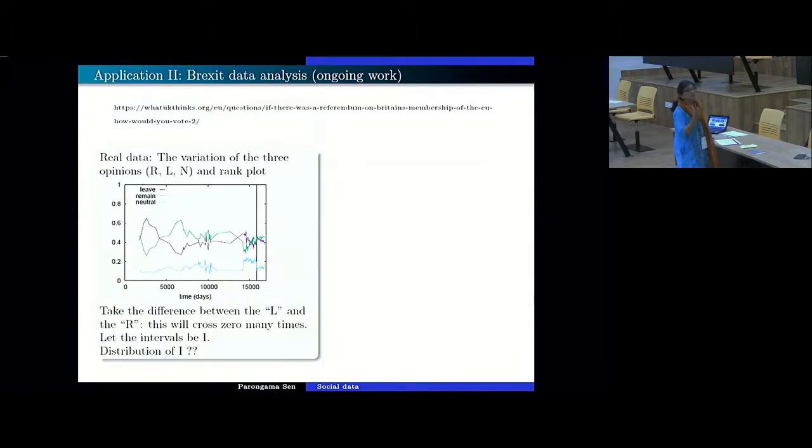So the other application is in the Brexit data analysis. You all know about Brexit, so I do not need to go through that. One more minute please. So we have three kinds of population. One part they want to leave, one part wants to remain and one part is neutral. So these are the behavior of the three. Time zero is some day in 2012 and this is the date where the referendum actually took place. Okay. So what we did was we took the difference between L and R and found out how many times it will cross zero. Crossing zero means that the verdict will be opposite. Okay. So how often does this verdict change?